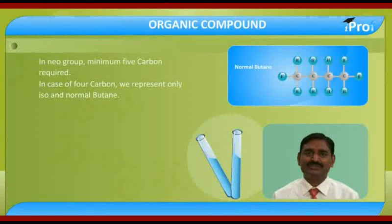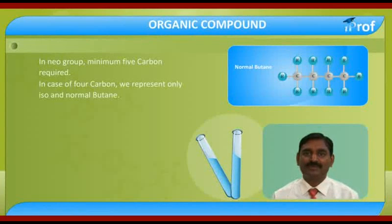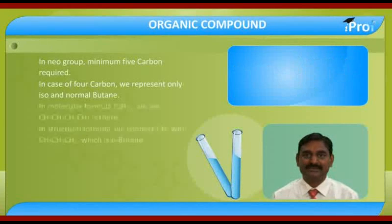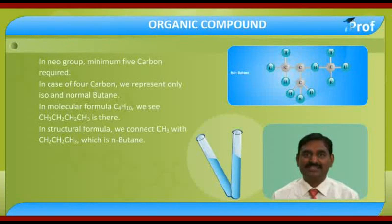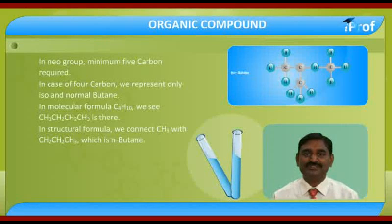Basically, the neo group requires a minimum of five carbons. In the case of four carbons, we represent only iso and normal butane. In the molecular formula C4H10, we see CH3, CH2, CH2, and CH3 — this is the structural formula.